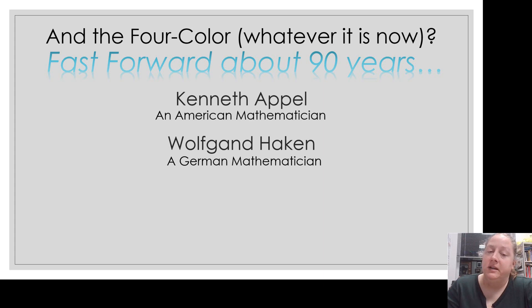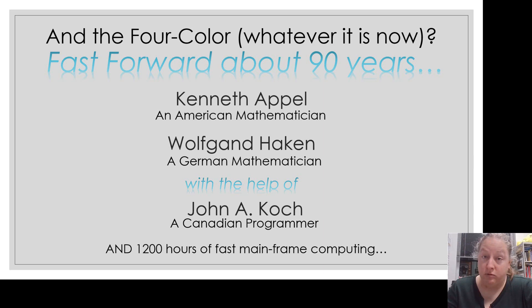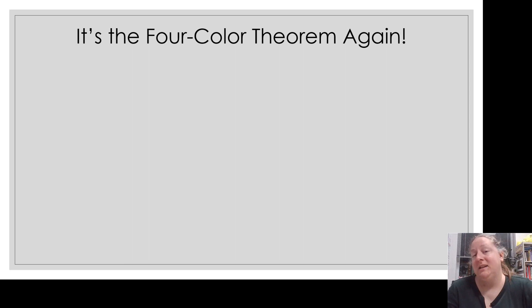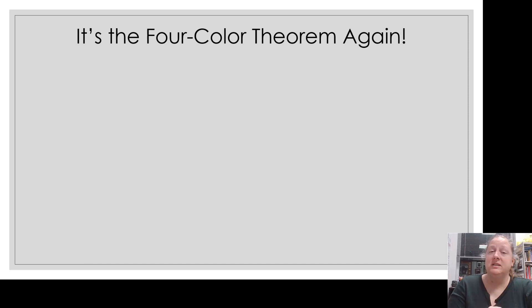Kenneth Appel, an American mathematician, and Wolfgang Haken, a German mathematician, joined forces with John Koch, a Canadian programmer. With the use of 1,200 hours of fast mainframe computing — this is the 1970s — we had a four-color theorem again. With that computing and the programming that went into it, the theorem had been proven true. The way they proved it was by testing all of the cases — going through an exhaustion of possible configurations that a map could have.